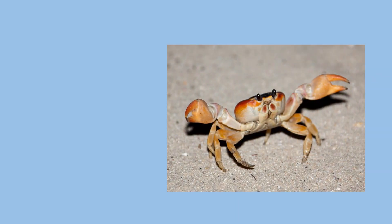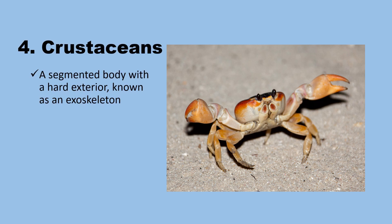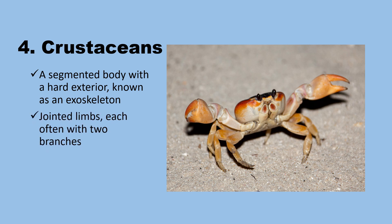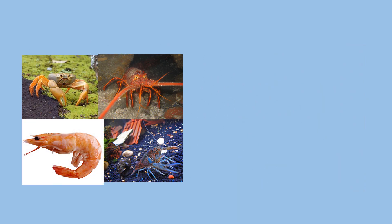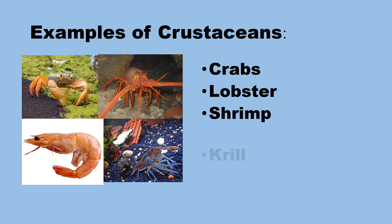Next we have crustaceans. They have a segmented body with a hard exterior known as an exoskeleton. They have jointed limbs, each often with two branches. Some have two pairs of antennae and gills. Examples of crustaceans include crabs, lobster, shrimp, krill, and crawfish.